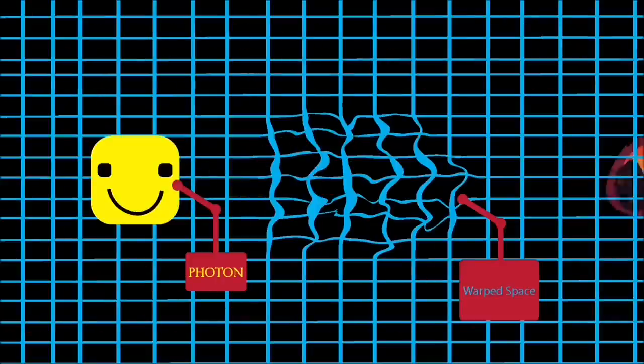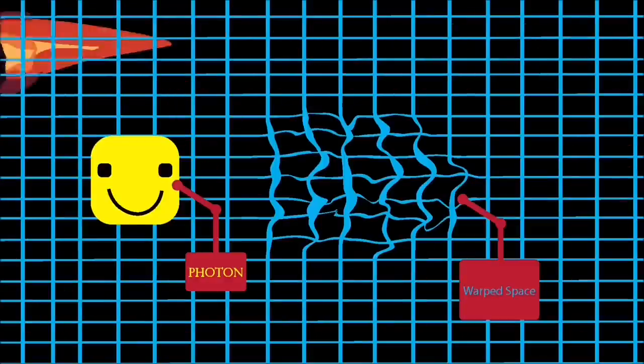But it doesn't. Why? Well, just because matter can't travel through space faster than light doesn't mean space itself can't expand and contract faster than light.